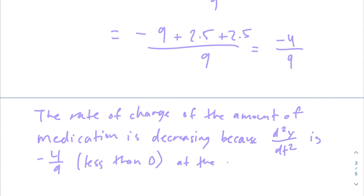So we can write: the rate of change of the amount of medication is decreasing because d²y/dt² = -4/9 < 0 at the point (1, 2.5). Hopefully this video helps you out with this AP Calculus problem. If you have any questions, feel free to leave them down below and I'll get back to you. Have a great rest of your day.